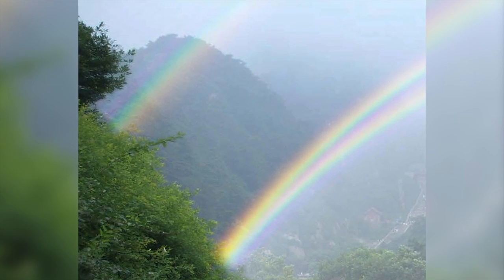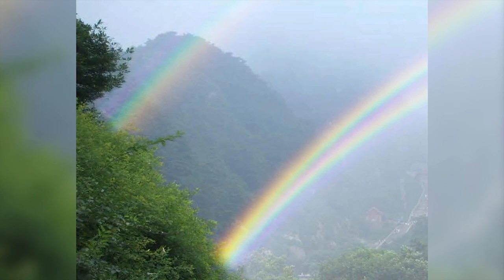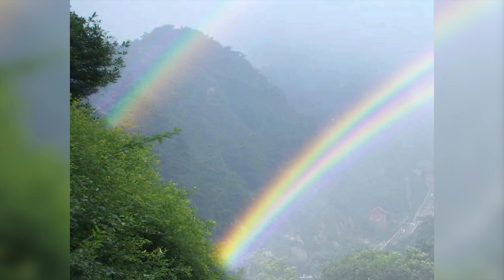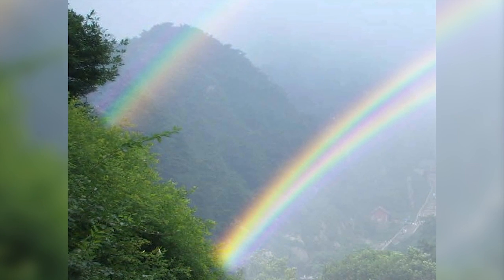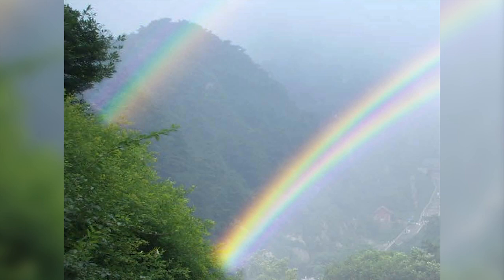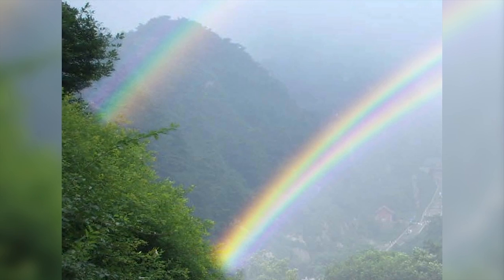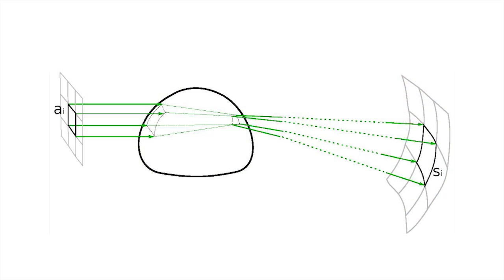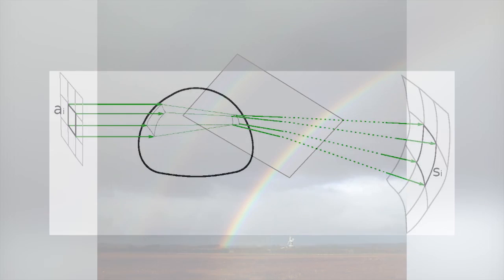Until our method was published, no one had been able to really explain this phenomenon, and no one had simulated it in 3D before with the full colors, as we show here. This picture illustrates the core of our technique: we employ a method called ray tracing, where we trace individual photons through the water drop shape.